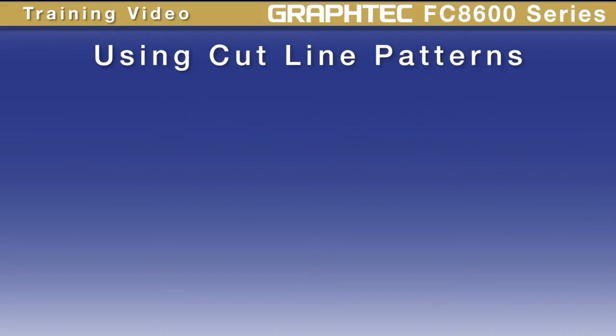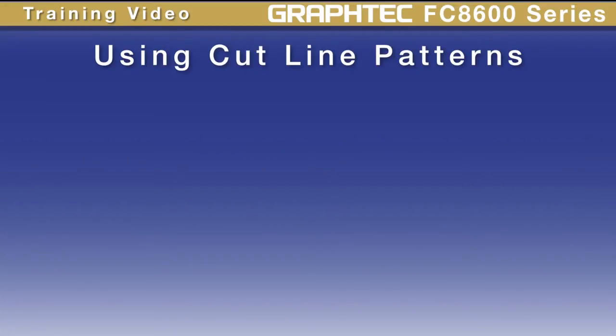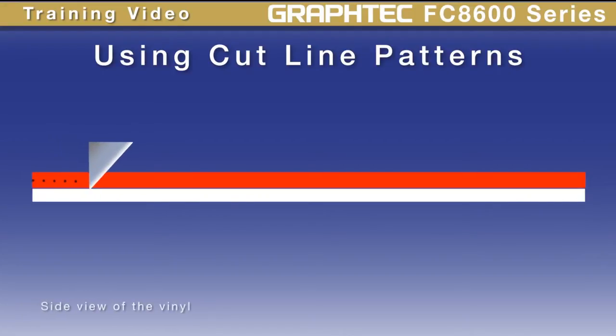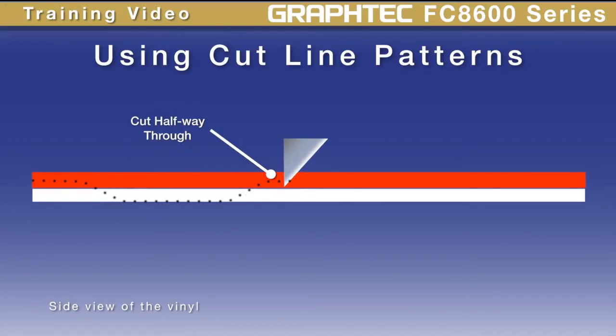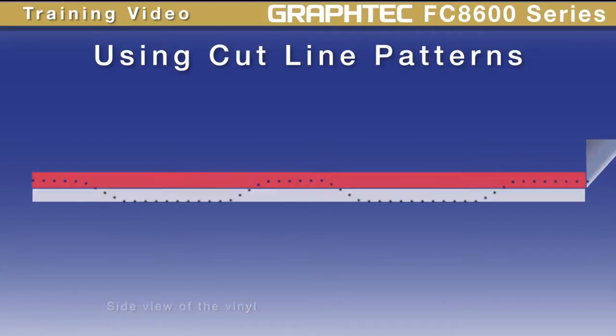In this lesson we'll discuss using the cut line pattern option. This is where the cut line is perforated, where the blade is lifted incrementally along the cut line. This is a specialized type of perforation designed so that when the blade is lifted it doesn't have to be completely lifted out of the material but only lifted halfway. This leaves notches or tags so that the cutter can cut completely through the backing without the cut piece falling out.